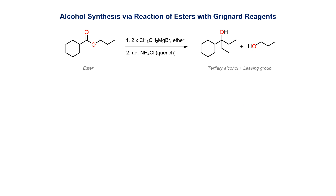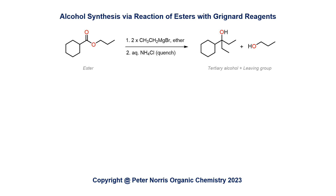To summarise, when an ester is treated with an excess of a Grignard reagent, the ester reacts firstly to give a ketone and an alkoxide. The ketone then reacts with a second equivalent of the Grignard nucleophile to give a tertiary alkoxide. Both alkoxides are then quenched by acid to give the isolated alcohol products.